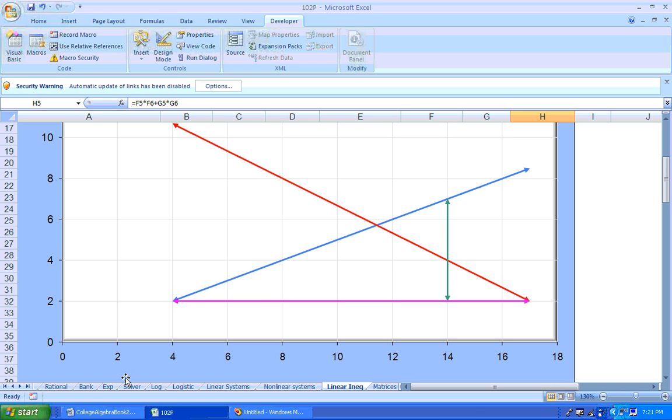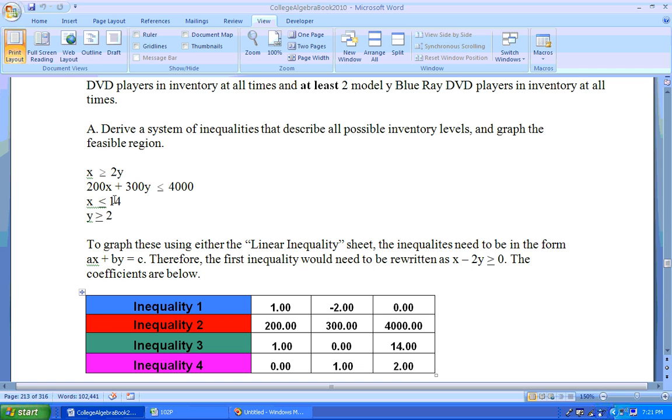Well, is that a solution to that inequality? Well, let's see here. If I substitute 0, 0 in here, that would be 200 times 0, plus 300 times 0. And 0 plus 0 is 0. And 0 is less than or equal to 4,000.